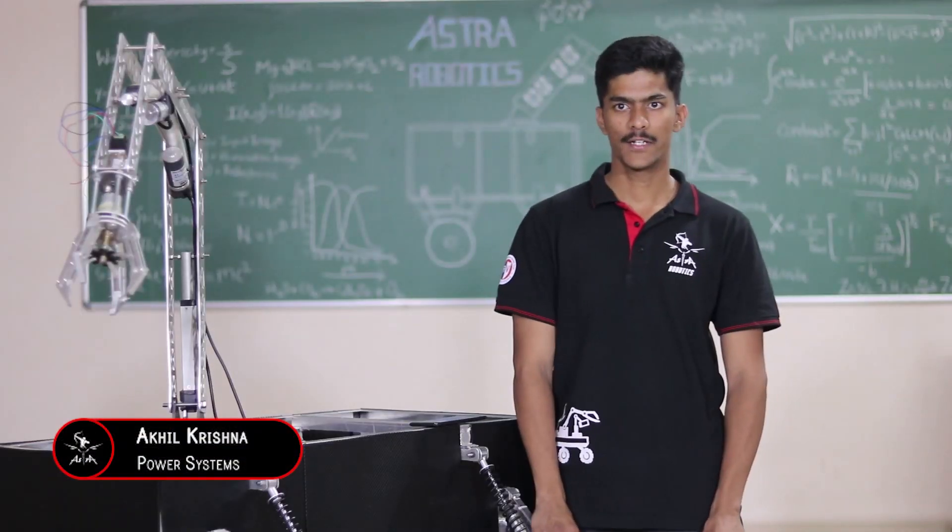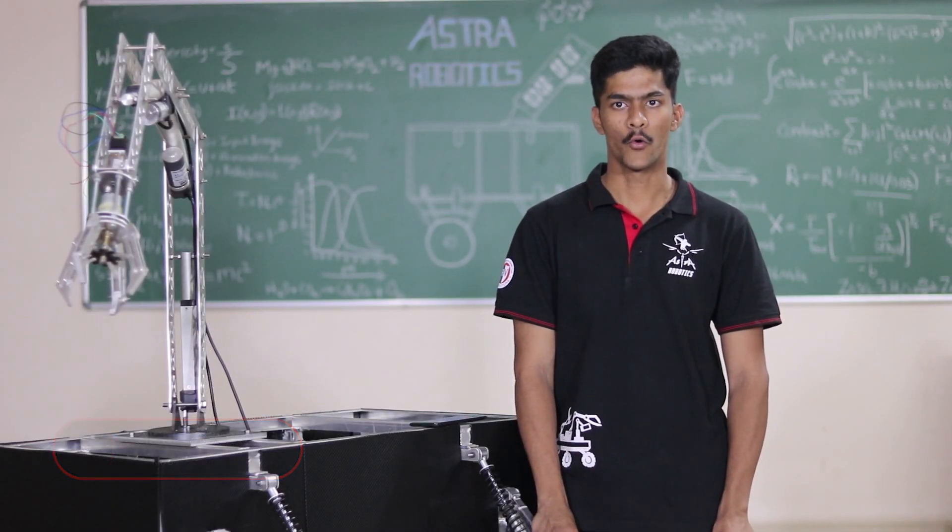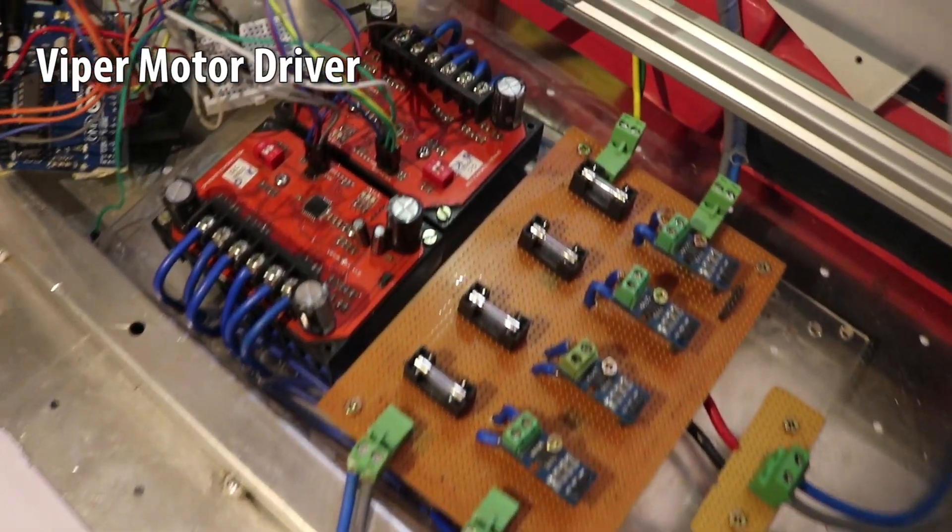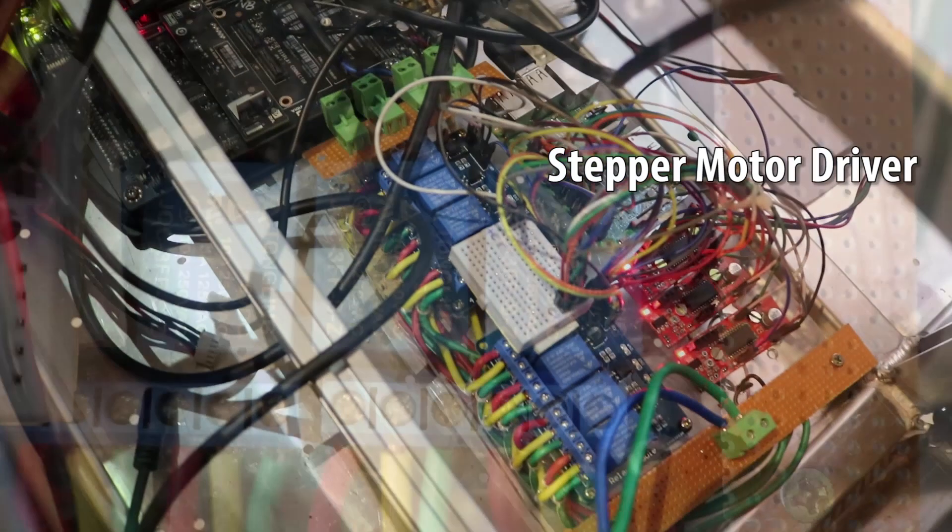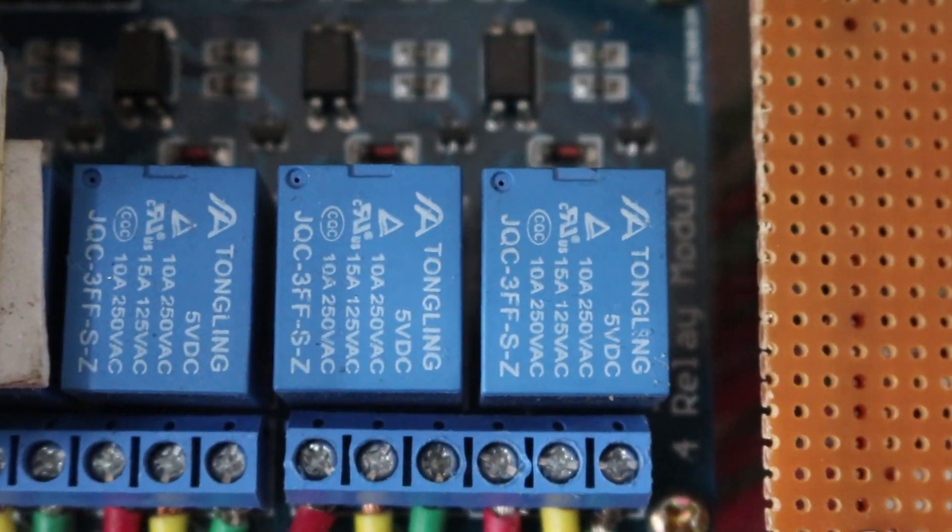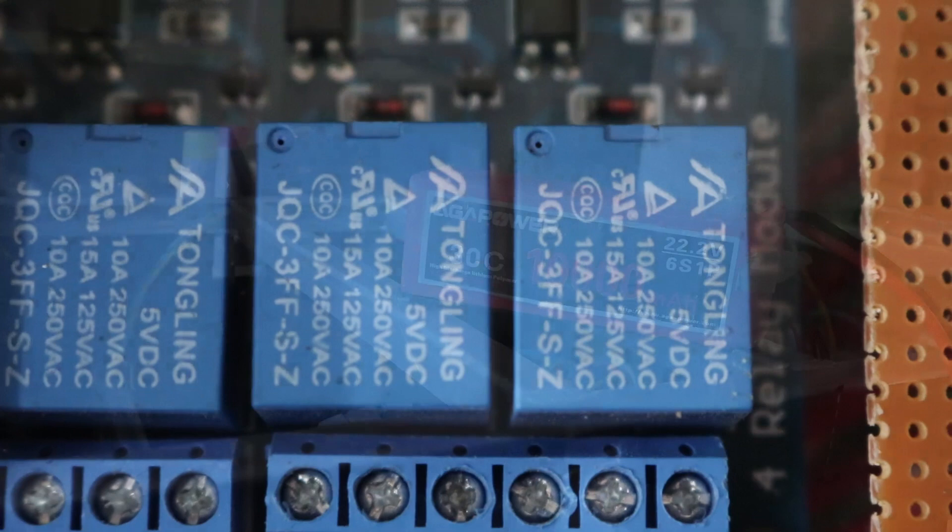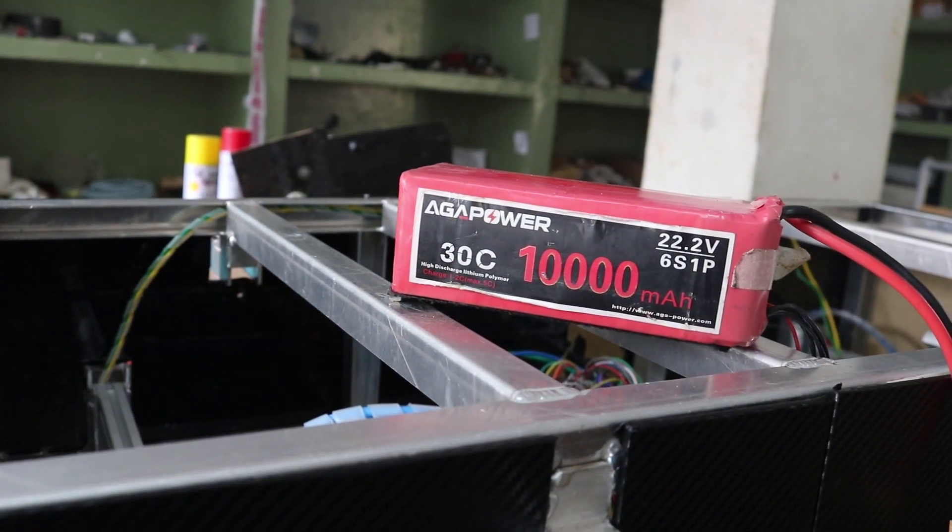The planetary gear motors are driven by Viper 35A motor drivers. Micro stepper drivers control the motors used to rotate the antennas as well as the base and the rest of the arm. Relays have been used for controlling the actuators. The rover is powered using a pair of 6S lithium polymer batteries.